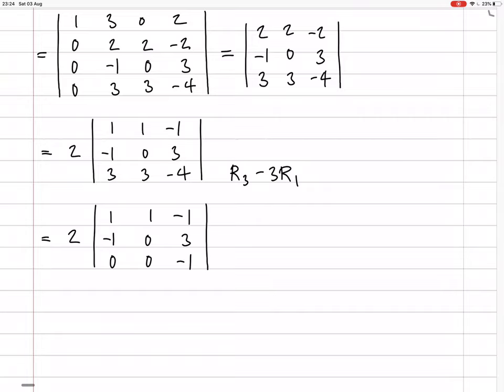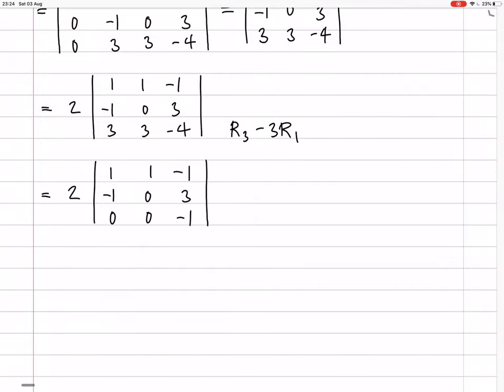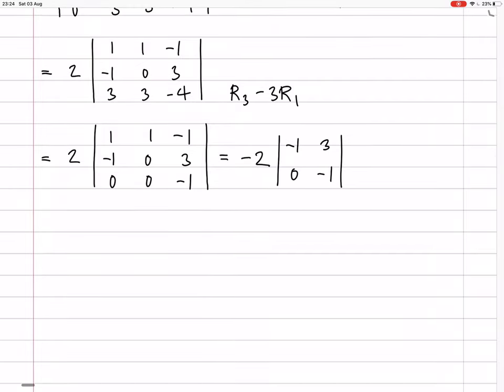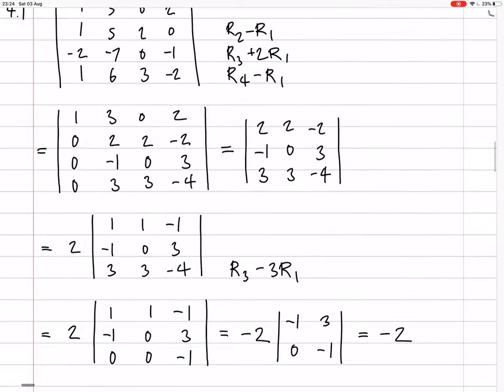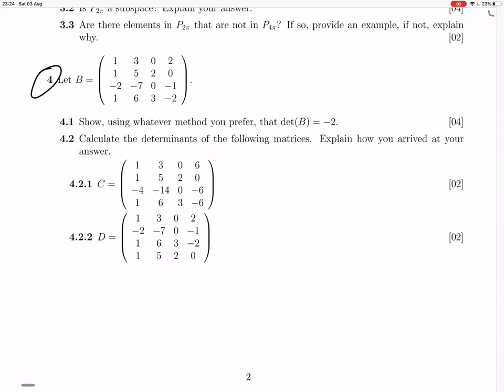Okay, so now we can expand down the middle column, or expand on the last row, either one. Let's do the middle column. That's an odd entry, so we need to swap the sign, minus 2, it's still 1 there. And then we have a determinant of minus 1, 0, 3, minus 1. Okay, but that's the upper triangle of that matrix, so the determinant is just the diagonal multiplications themselves, so minus 1 times minus 1, which is 1, so you just get minus 2, which is what we wanted to get, right? Yes, cool.